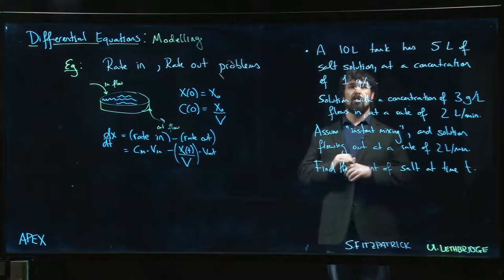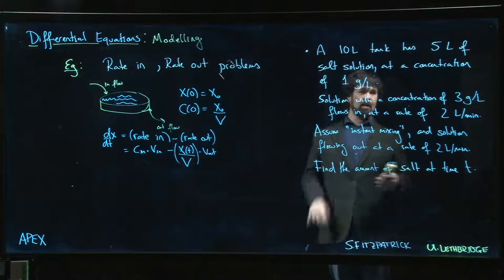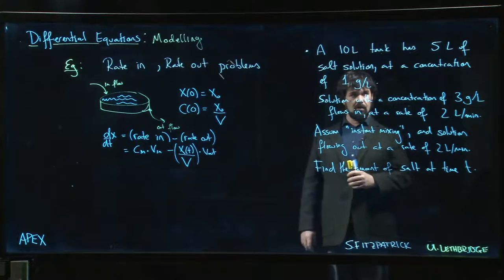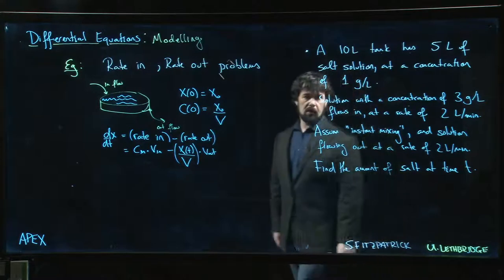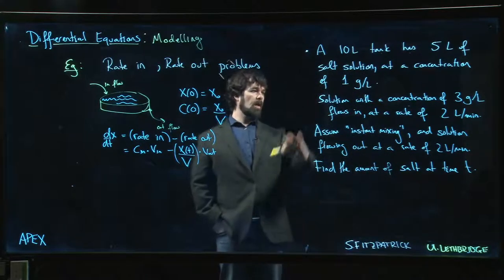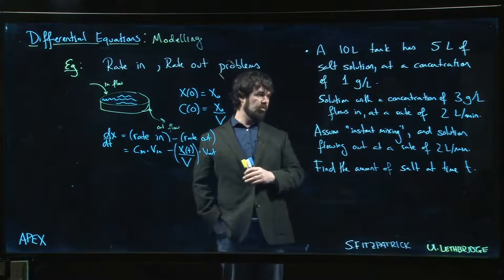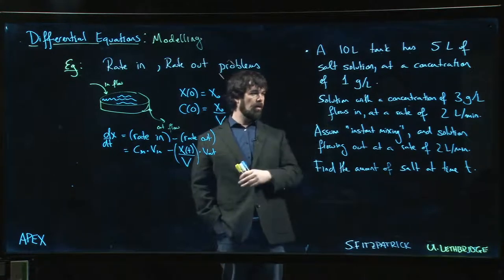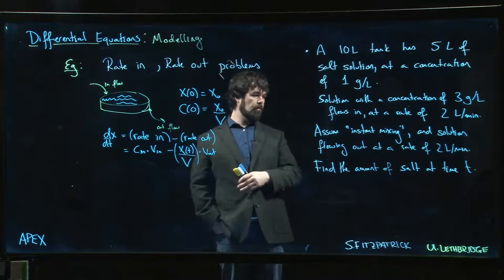Let's review the scenario. We've got a 10 liter tank, something like the one we drew over there. In the tank is five liters of salt solution at a concentration of one gram per liter. We're going to add some salt solution at a concentration of three grams per liter that's going to flow in at a rate of two liters per minute.